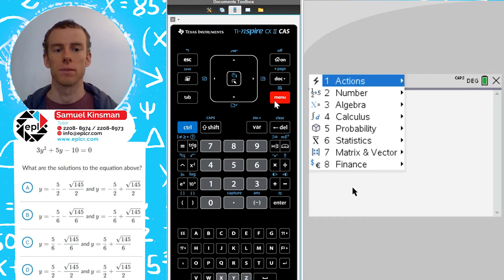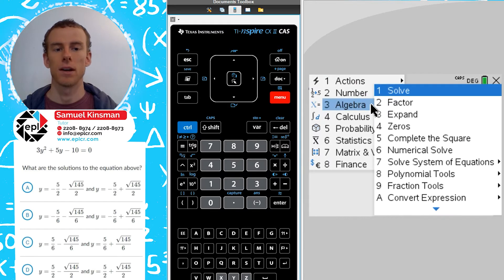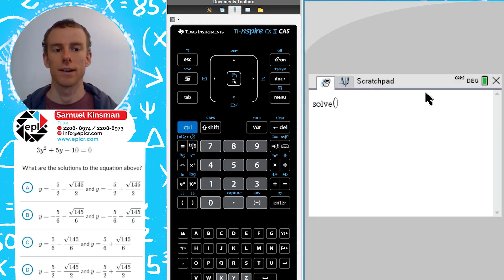So we're going to go to menu algebra and we're going to use the solver again. Now we're going to type in our equation and we set it equal to zero because that's when we get the roots.